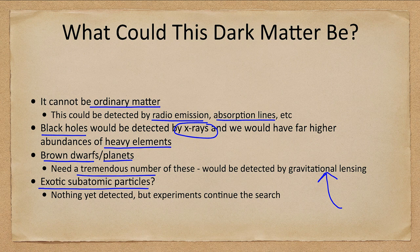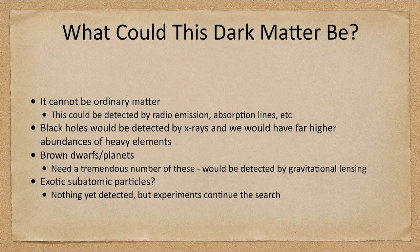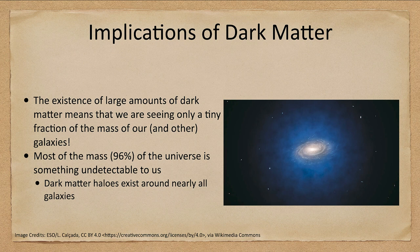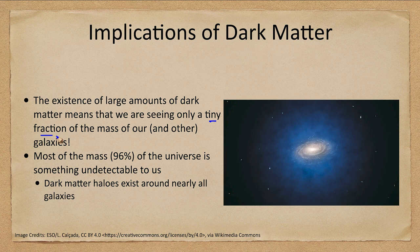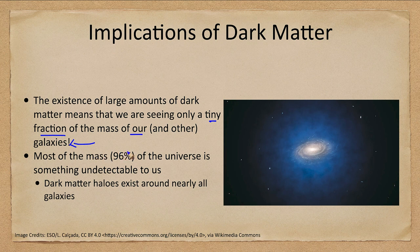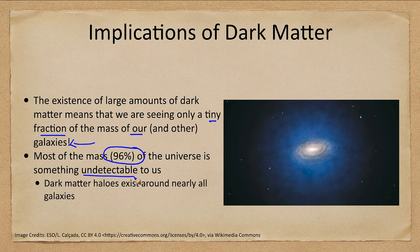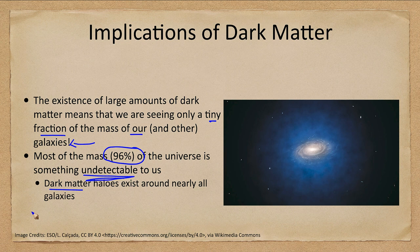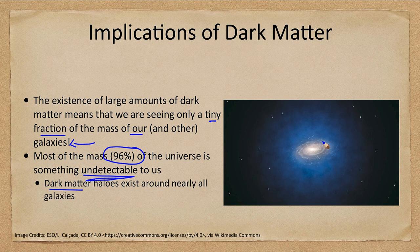So what does dark matter tell us? It means that we see only a tiny fraction of the mass of our galaxy as well as other galaxies, and that most of the mass of the universe—96 percent of it—is something undetectable to us. We see dark matter halos around nearly every galaxy. The actual visible portion of the galaxy is a very small amount of the material that makes up that galaxy.